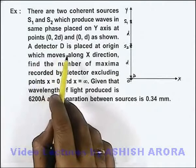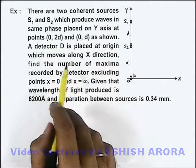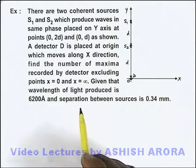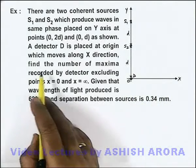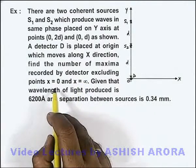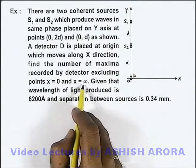A detector D is placed at origin which moves along X direction. Here this is the detector which is moving along X direction. We are required to find the number of maxima recorded by the detector, excluding points x = 0 and x = ∞.